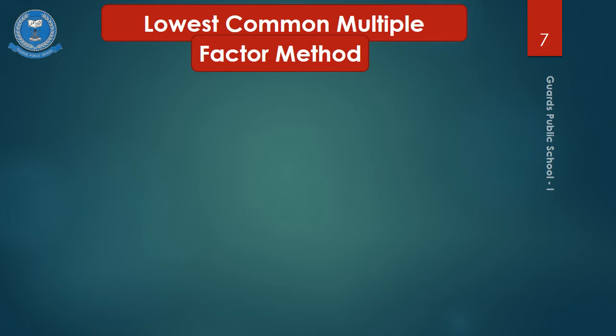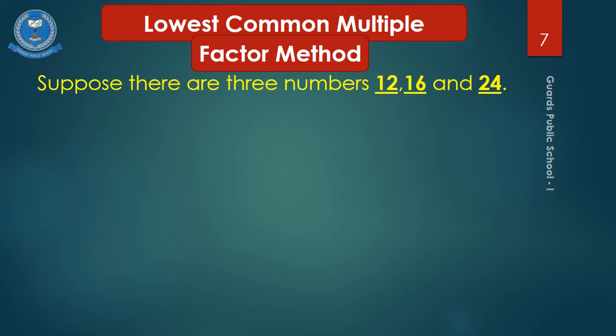One more example: find the LCM of 12, 16, and 24. First, write down 12. Take the smallest prime factor, which is 2. In the 2 times table, 12 gives 2 multiplied by 6. Again, the smallest prime of 6 is 2, giving 2 times 3. Since 3 is prime, 3 ones are 3. When 1 comes, the factorization of 12 is complete.